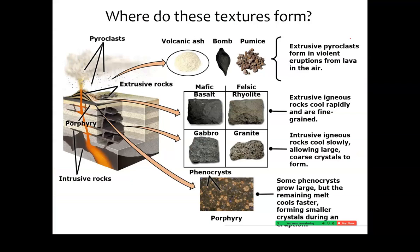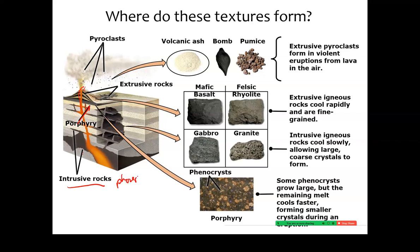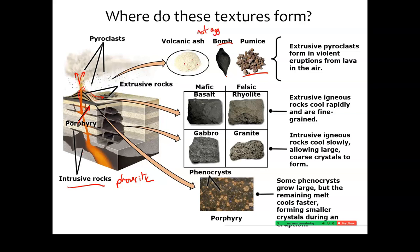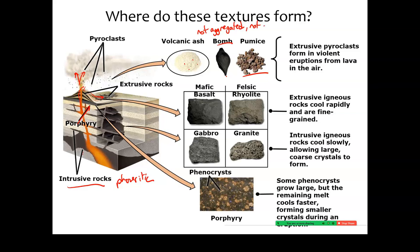So where do these textures form — how do we go from observations to interpretation? Porphyries form somewhere in between, maybe starting underground and then erupting. Intrusive rocks cool completely underground and so they're phaneritic. Extrusive rocks erupted as a liquid on the surface and flowed across, cooling pretty fast. Pyroclasts are thrown into the air by violent eruption — we've got pumice, volcanic bombs that might be made of obsidian, and volcanic ash, which is not really considered a rock yet because it's not aggregated into a solid. But if you weld those pieces together, you call it a tuff, and then it is a rock.